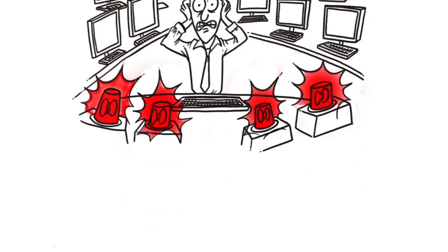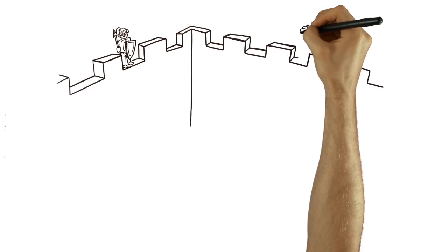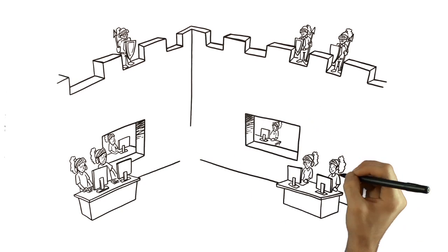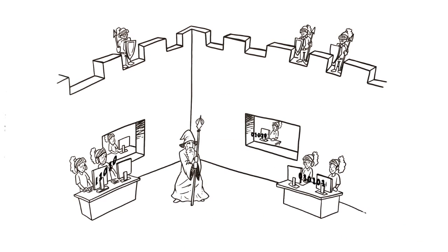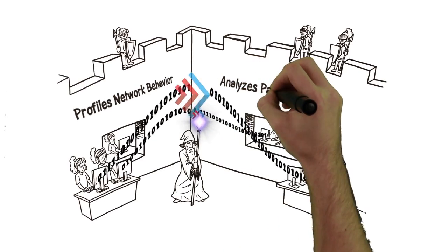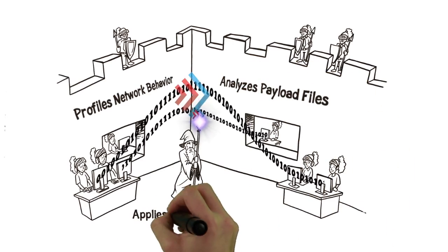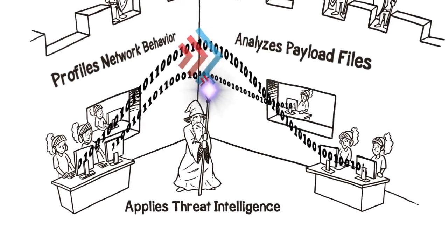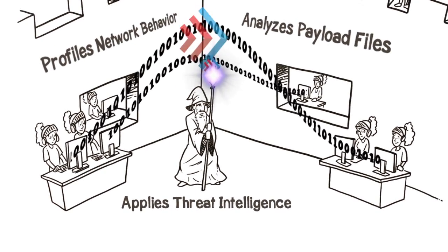Stop the noise. Instead of noisy alerts, Damballa Failsafe issues a definitive verdict when a device is infected. Along with sandboxing, Failsafe automatically profiles network behavior, analyzes payload files, and applies threat intelligence. These multiple detection techniques help us prove infection beyond a reasonable doubt.